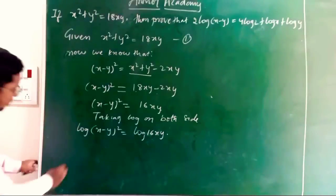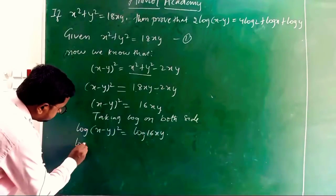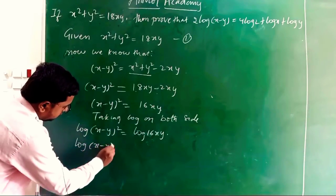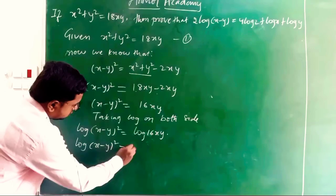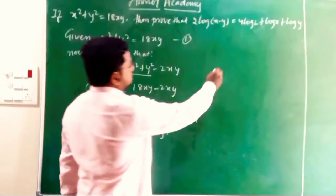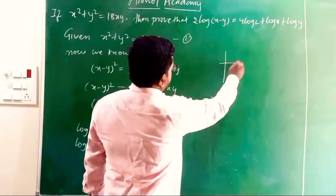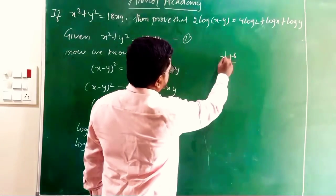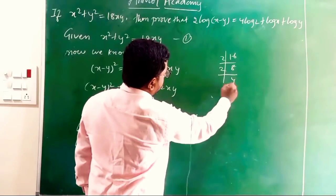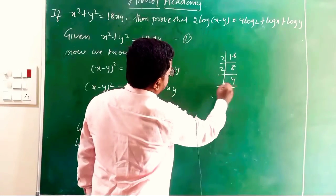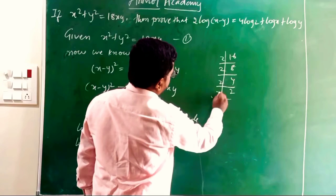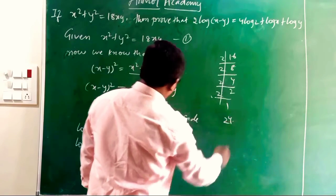So log(x − y)² = log(16xy). Now the factors of 16: 16 = 2 × 8 = 2 × 4 × 4 = 2⁴. So 16 = 2 power 4.